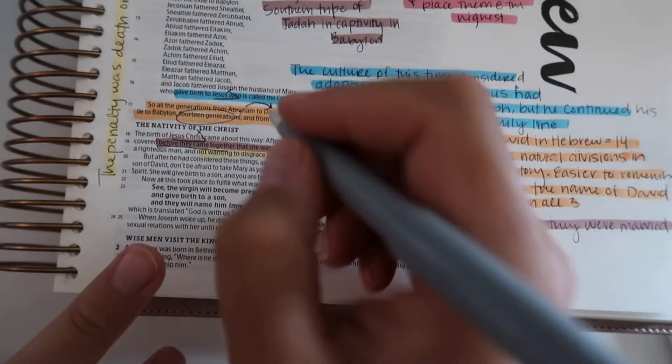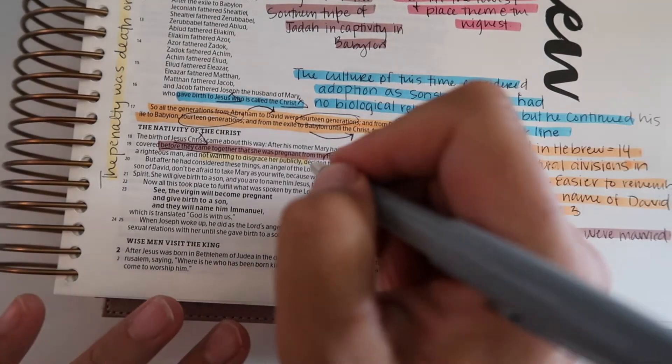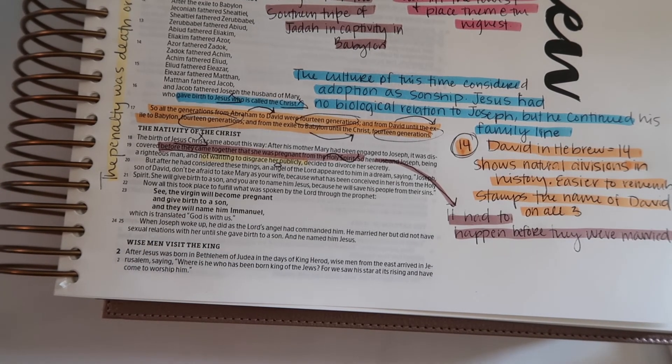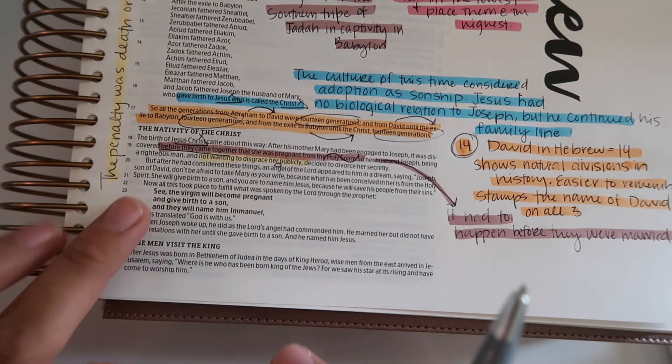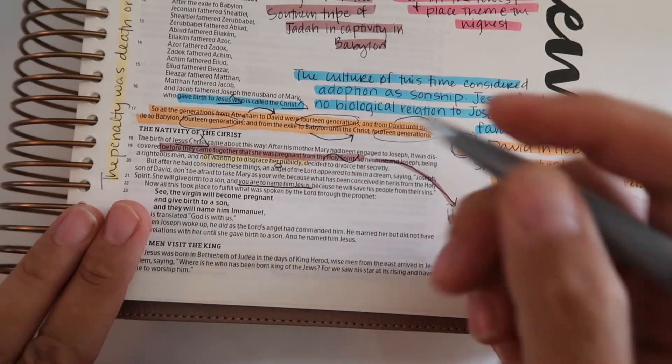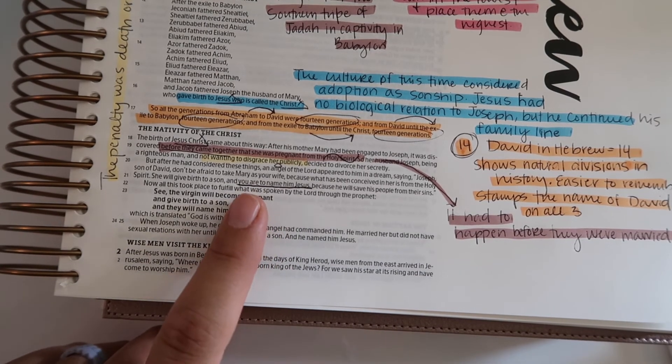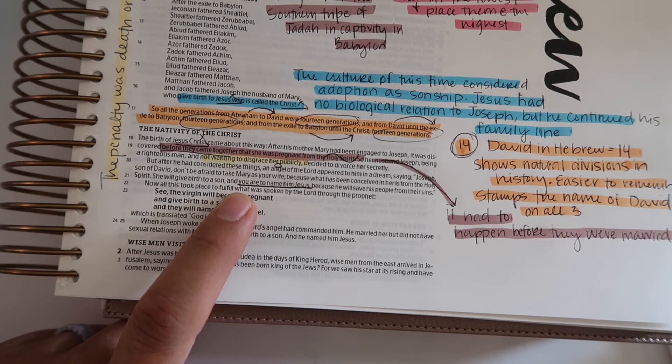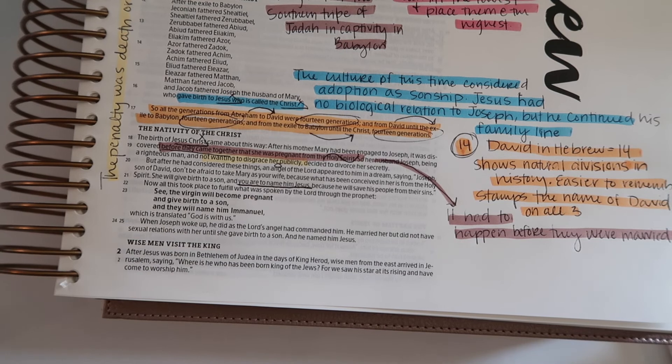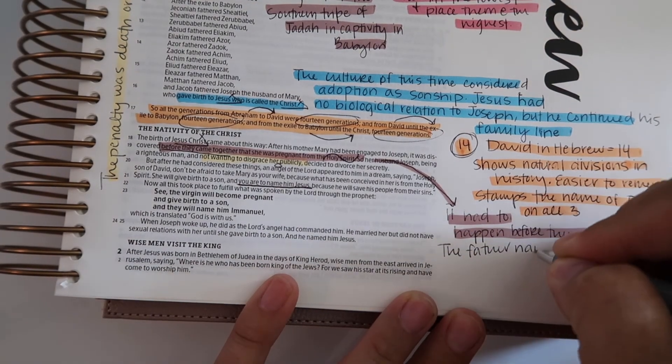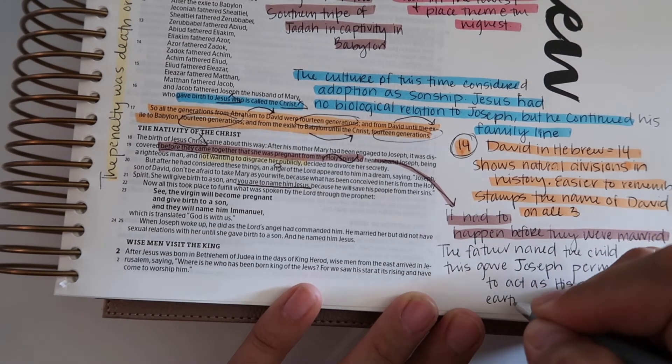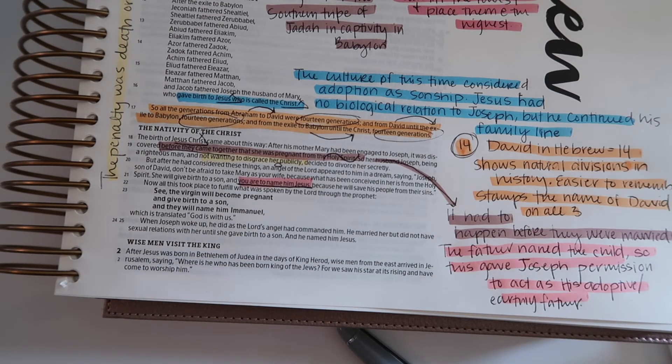But after he had considered these things, an angel of the Lord appeared to him in a dream saying Joseph, son of David, don't be afraid to take Mary as your wife because what has been conceived in her is from the Holy Spirit. She will give birth to a son and you are to name him Jesus. I didn't realize how significant this was. This angel instructs Joseph to name him, and what that meant back then is the father named the child. This gives Joseph permission to act as his earthly father, as his adoptive father.